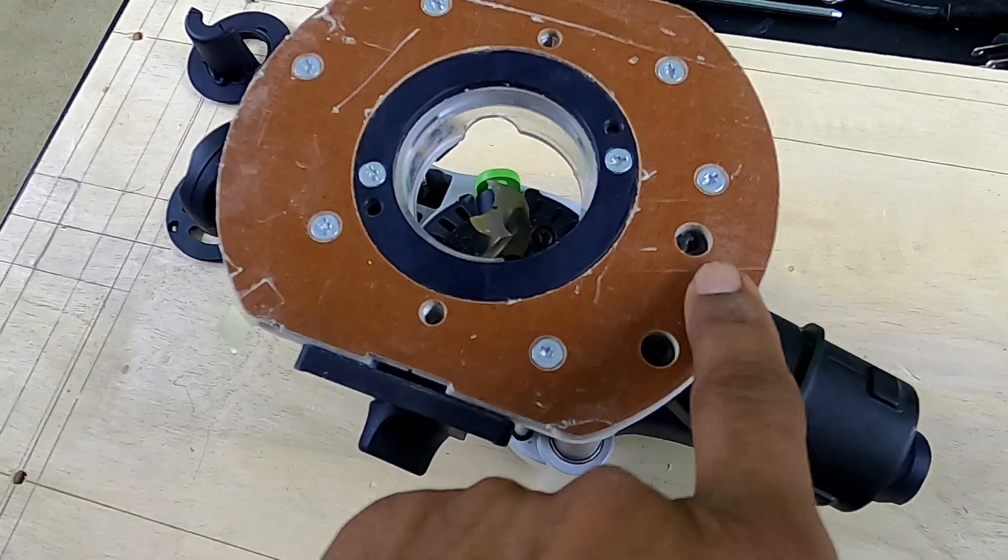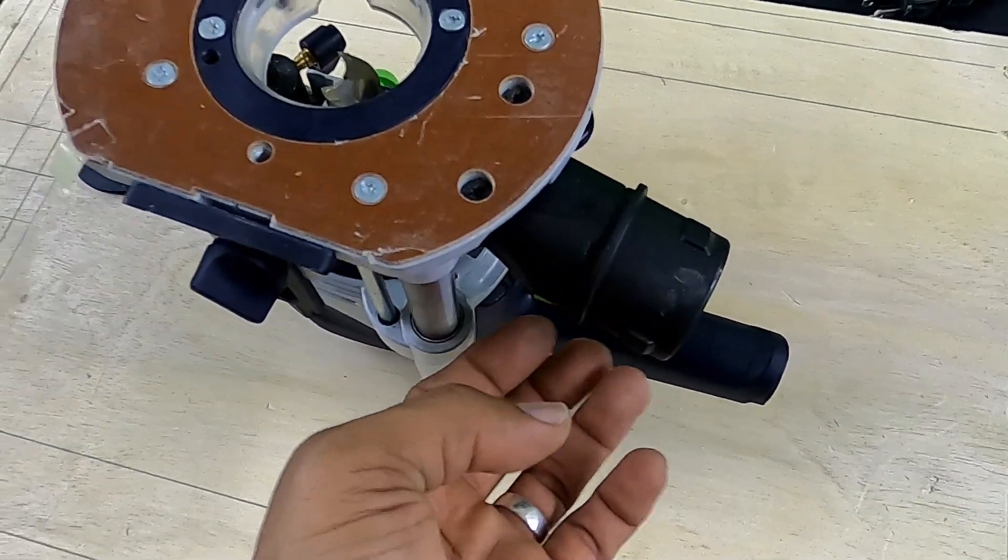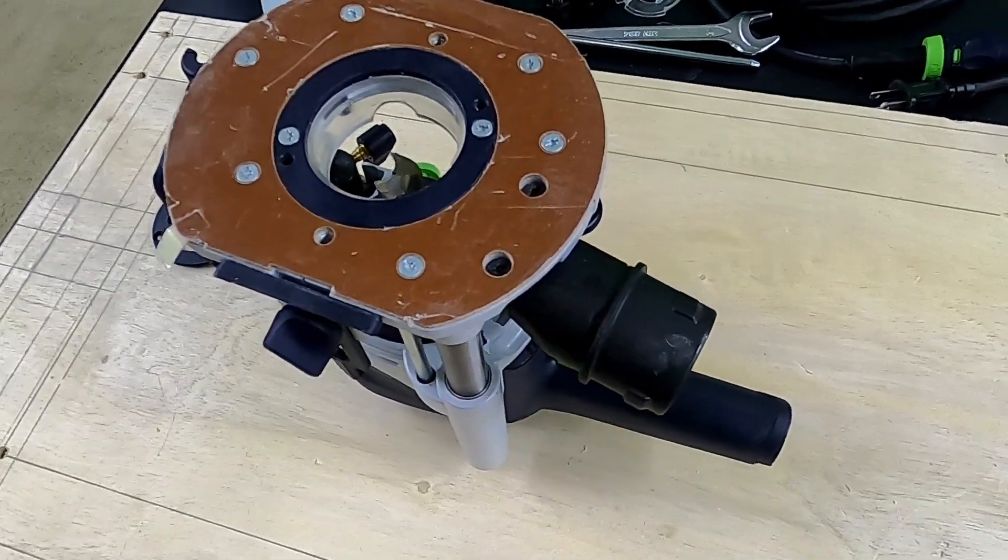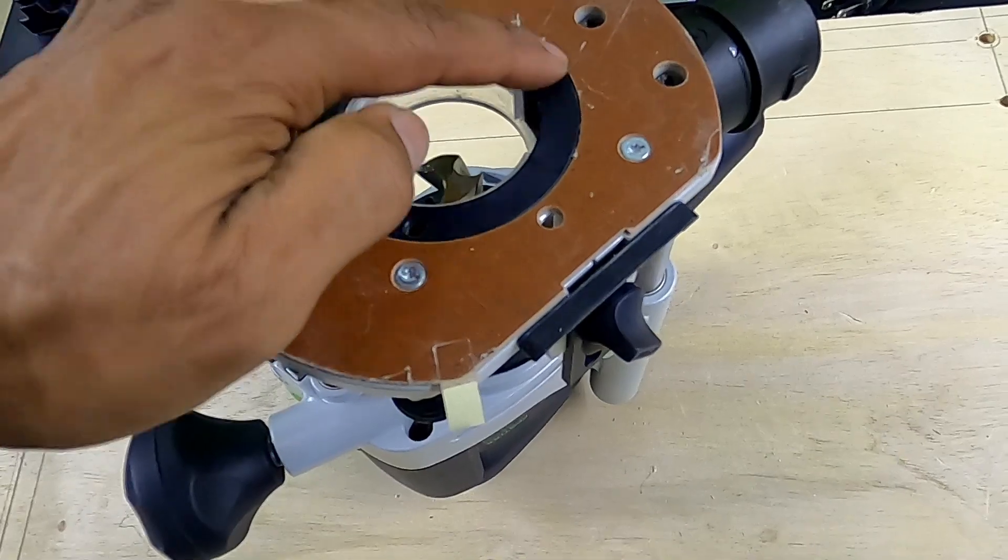You also have two screws here to remove the dust collection nozzle. It is plastic, so if it gets broken, I'm pretty sure that's a replaceable item. Turning it around, looking at the other side of this ring, you can see there's a lip right here for dust collection.